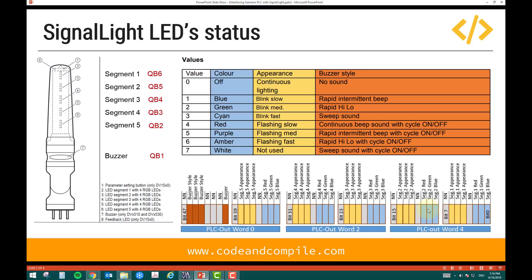Similarly, you have another byte for segment 2, another byte for segment 3, segment 4, and segment 5. Then you have the last byte for the buzzer. If you want to enable the buzzer, bit 0 should be true. Then bits 4, 5, and 6 define the buzzer sound — whether it's rapid, intermediate, high, low, sweep, or different sound signals.